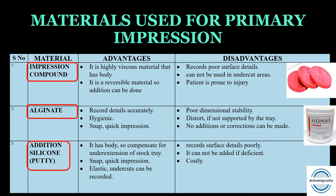Third is addition silicone in putty form. It has body so it can compensate for under-extension of the stock tray, allows a quick snap impression, and being elastic, undercuts can be recorded — a big advantage. Disadvantage: high viscosity means surface details are not as good, corrections cannot be added if deficient, and most commonly it is not used because it is very expensive.